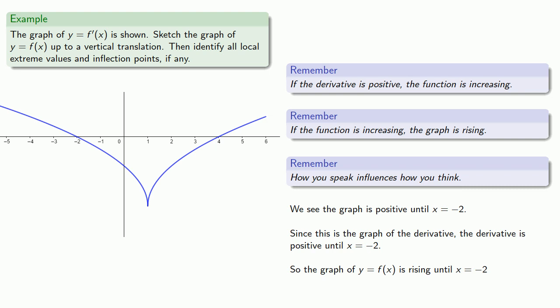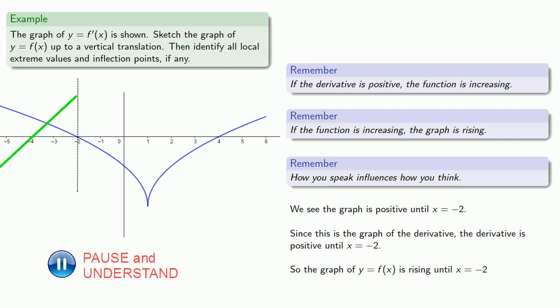Remember we lose the information about the vertical translation, so we have no idea what y is. It will be helpful if we draw a vertical line through x equals negative 2 — wherever we start, we rise until we hit the line. So our graph looks like this. The dotted line just shows us where x equals negative 2, so we don't really need it anymore and we'll get rid of it.